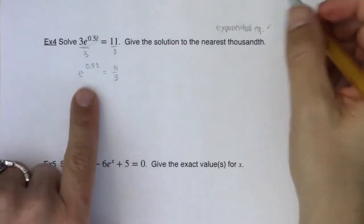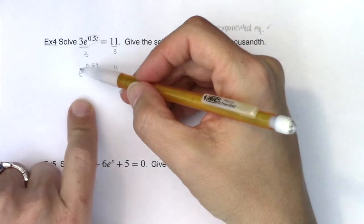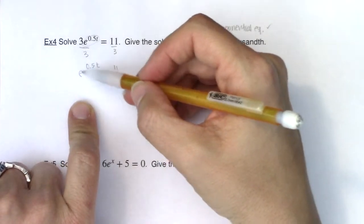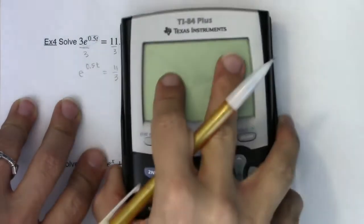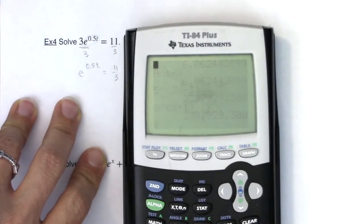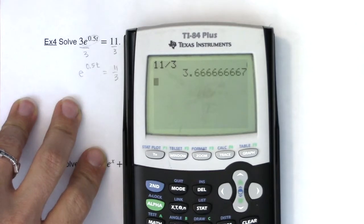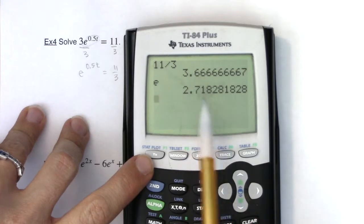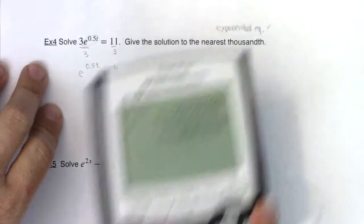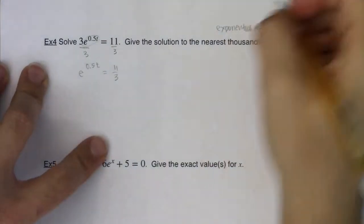Taking a look at this, it looks like my base on the left side of the equation is the number e, which is about 2.178. And if I look at my number that's on the right side of the equation, that's 11 thirds, that is not equal to the number e. So I have an exponential equation, but the bases are not the same.